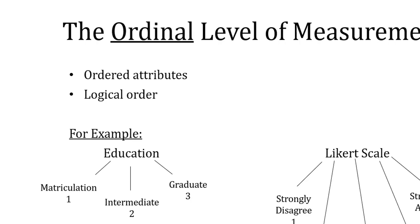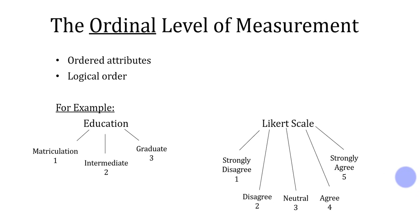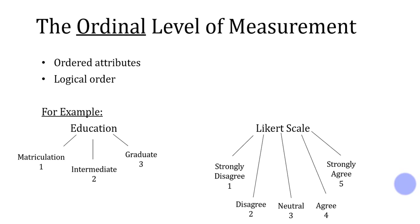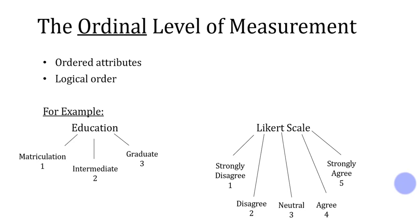So here, I am following some order from lowest education, from lowest qualification to the highest qualification. Matriculation is the lowest, so I have assigned the lowest number to it, and graduate is the highest qualification, so I have assigned the highest number to it. In a similar way, Likert scale, there are five options, strongly disagree to strongly agree. So strongly disagree is the extreme negative option. We can say that it has extreme negative response, and strongly agree is an extreme positive response. So I have assigned the lowest number to extreme negative response and the highest number to extreme positive response. So here also, I am following some order. So that is why we can say that this is also the example of ordinal variable.